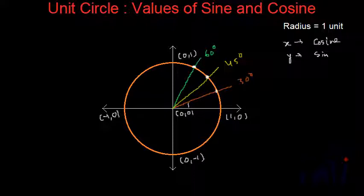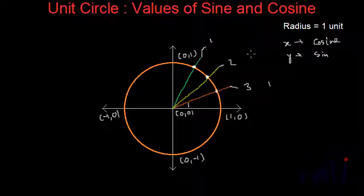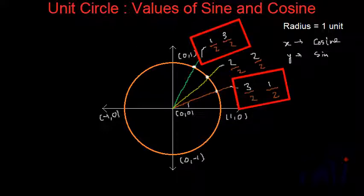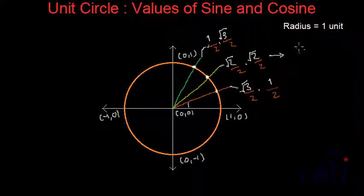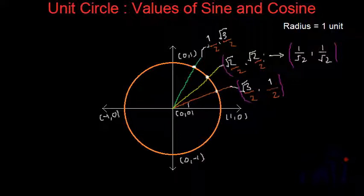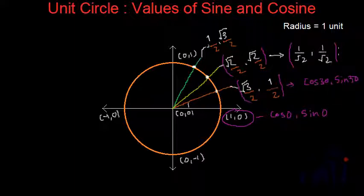Here is the shortcut to find the coordinates. Write down 1, 2, 3, then write down 1, 2, 3 again. Divide all of them by 2 and take the square root of each numerator. Square root of 1 is just 1, and root 2 over 2 can be written as 1 over root 2. These values represent the cosine and sine of the standard angles: cosine 0 and sine 0, cosine 30 and sine 30, cosine 45 and sine 45, cosine 60 and sine 60, and cosine 90 and sine 90.